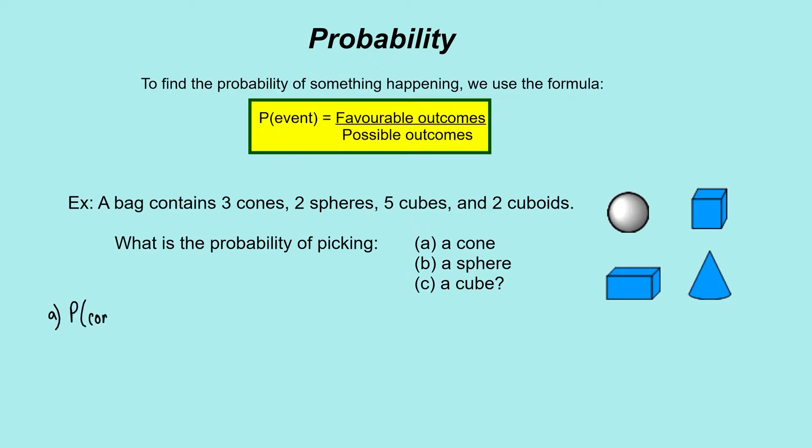Let's have a look at that. The way we write that is P(cone) to communicate that that's the probability of picking a cone clearly and not mix it up with any of the other shapes in the bag. For a cone, we've got to look at how many cones are in the bag. Well, there's 3, so 3 cones in the bag.